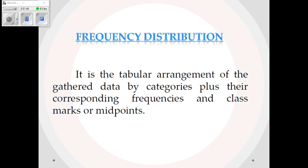In the case of giving a test to students to know about their achievement, raw scores serve as data. The data has not yet undergone any statistical technique. To understand the data easily, we arrange it into groups or classes. The data so arranged is called group data or Frequency Distribution.